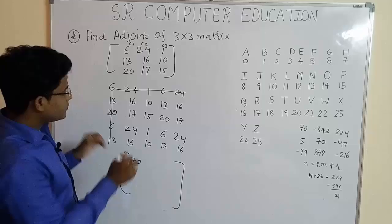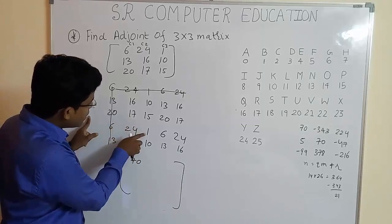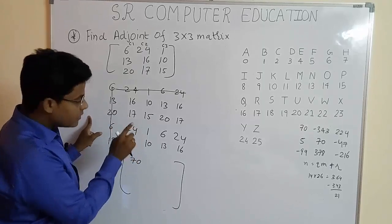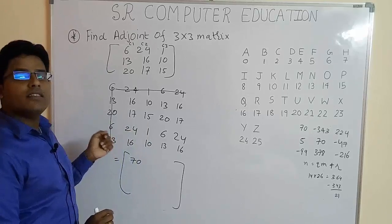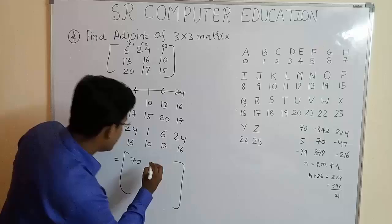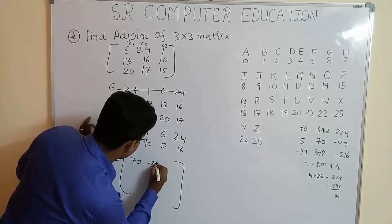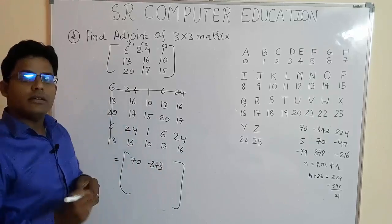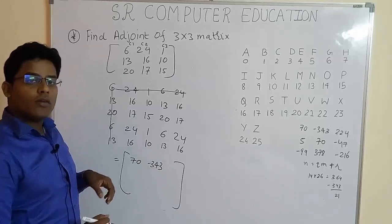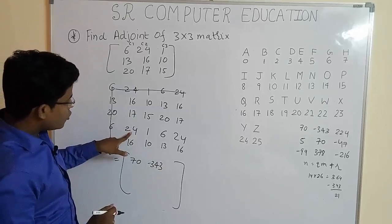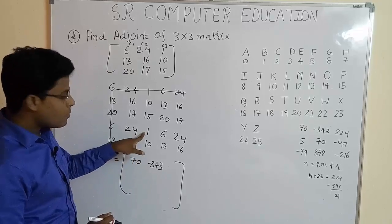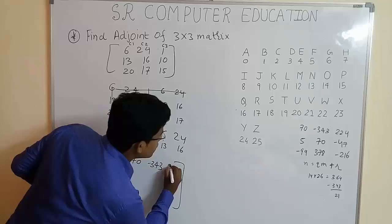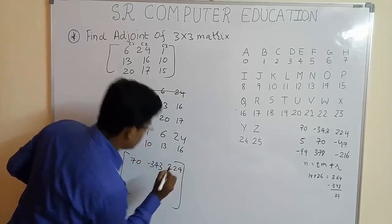Now, second, 17 multiply by 15. Whatever answer you get, you have to write here. And the third element of the first row would be 24 multiply by 10 minus 16 multiply by 1. So, you get here 224.